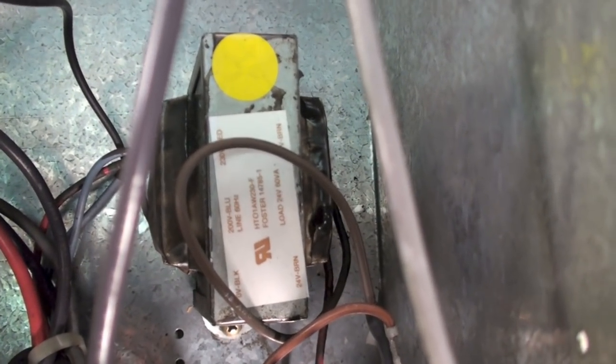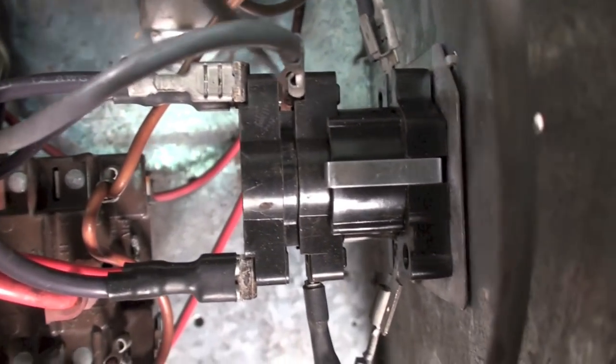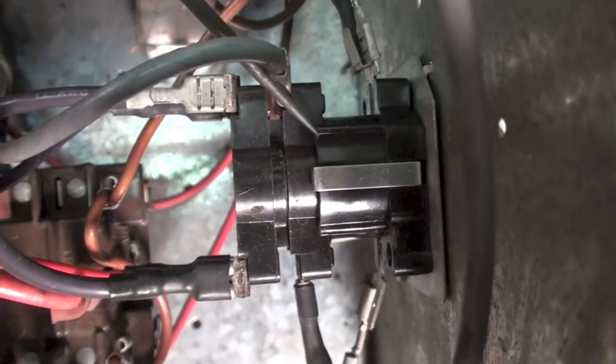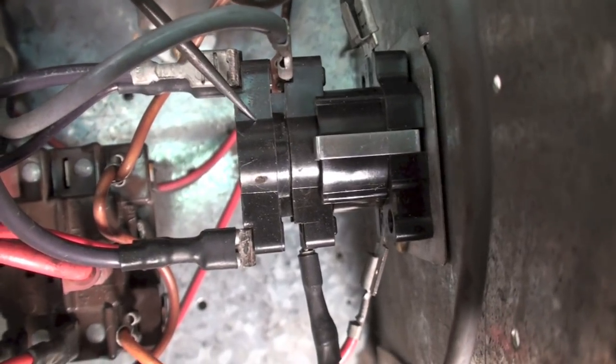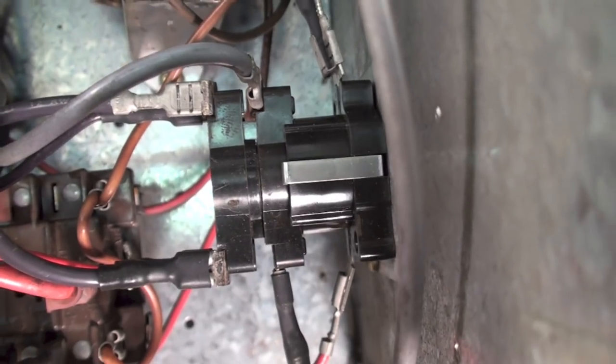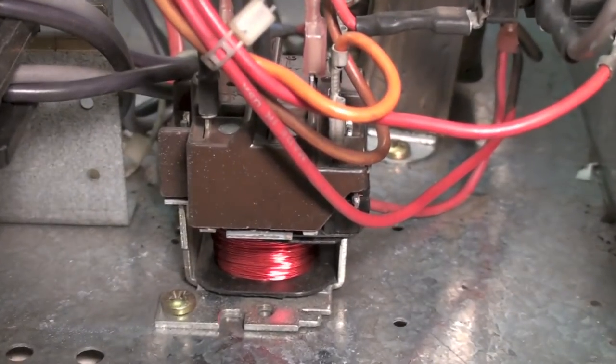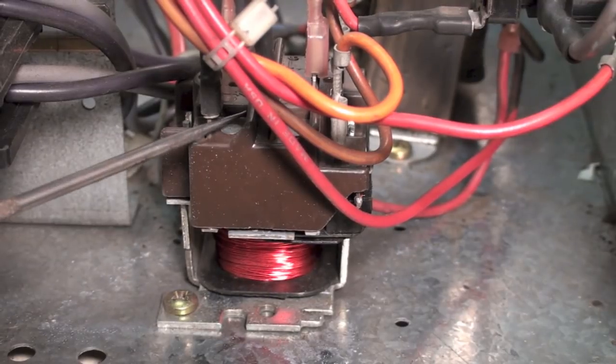Now we've got a transformer to get us 24 volts. Probably the biggest problem in these things is this part right here. This is a sequencer. This turns on the elements when there's a call for heat.